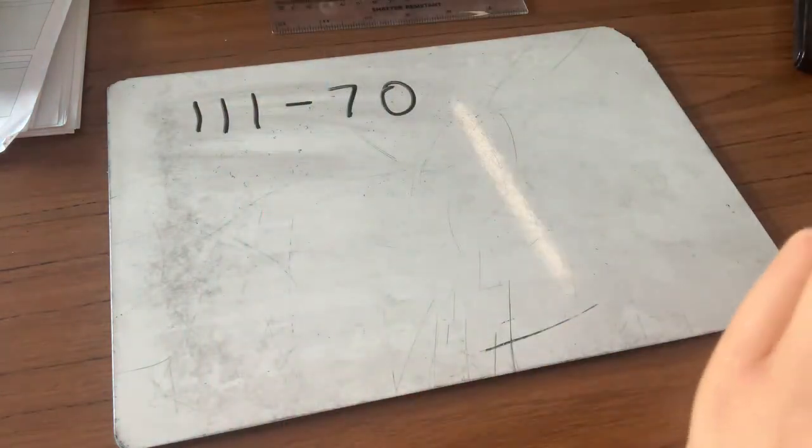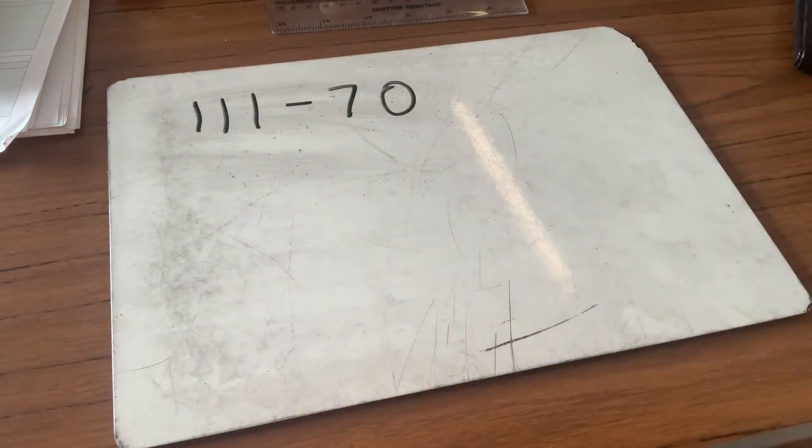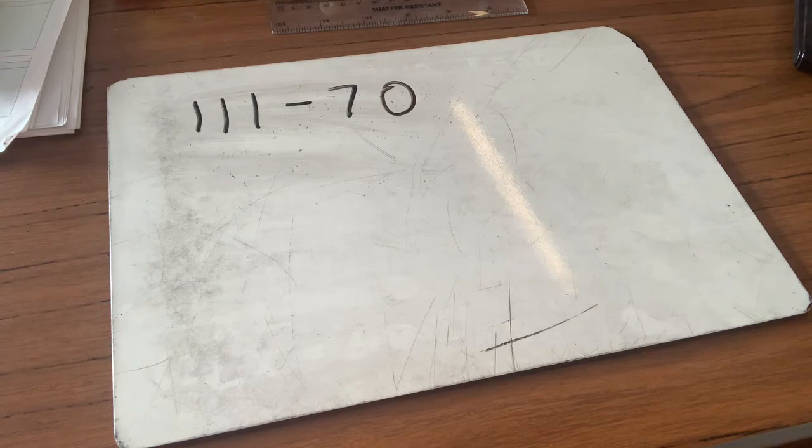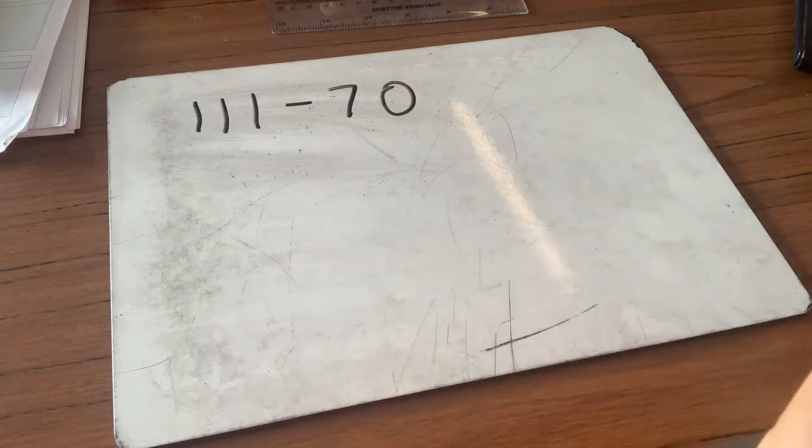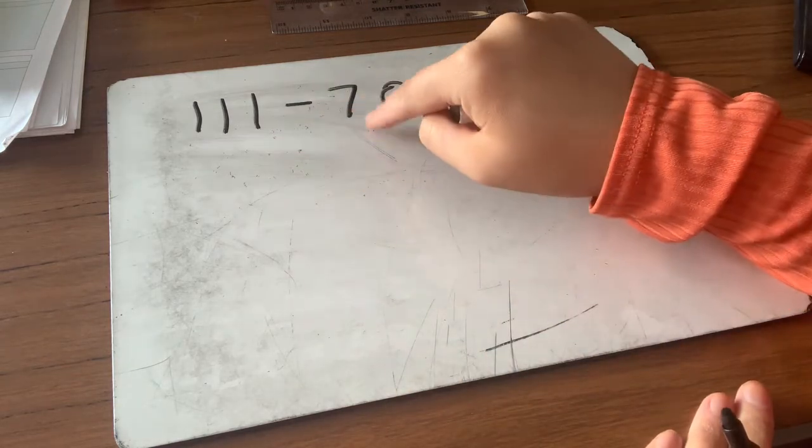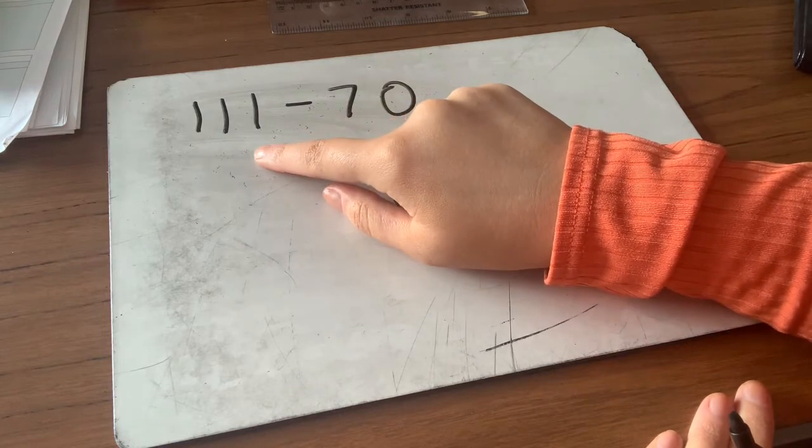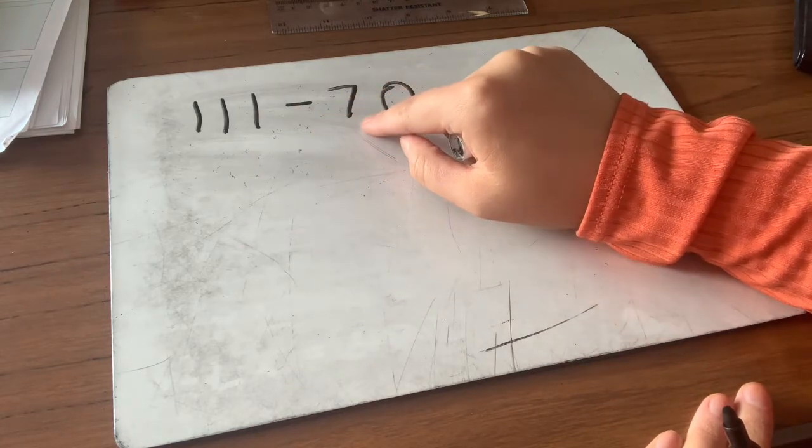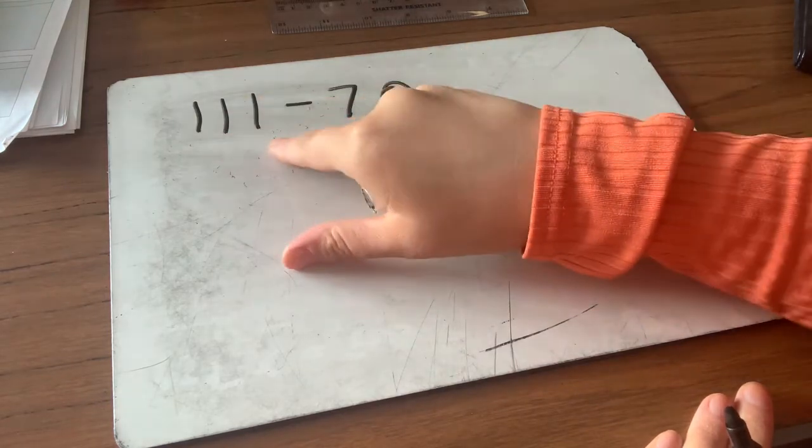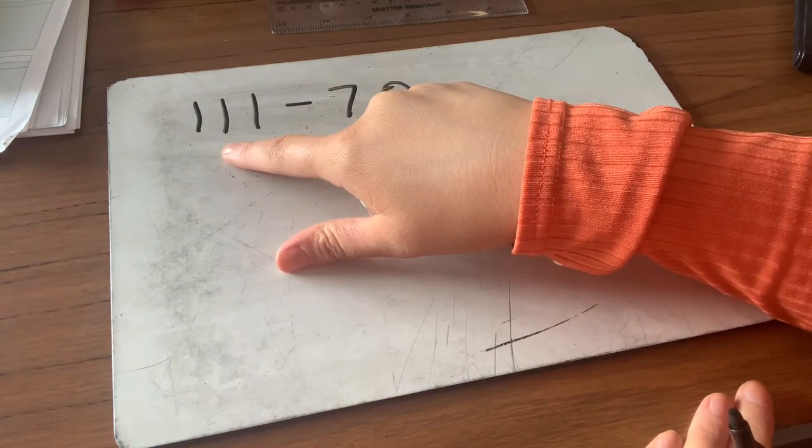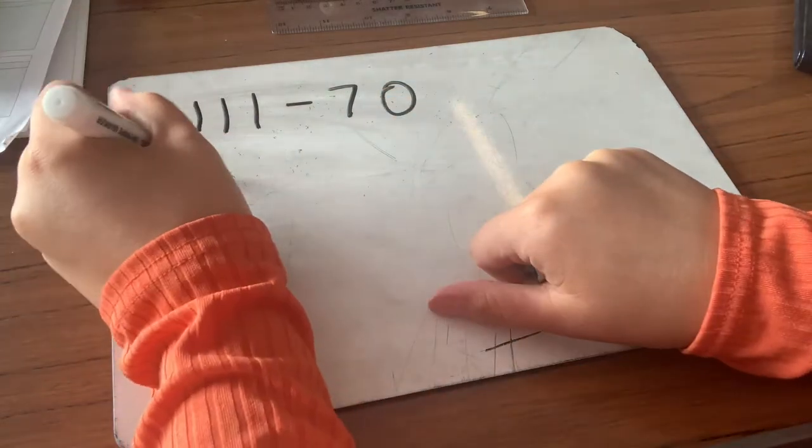Let's look at another one. So we've got 111 take away 70, so give this one a go. All right, we're already at the next 10, so we're just going to start counting on from 70 to 111. So I know that to get up to 100, I need three 10s, and then 11 more. So three 10s is 30, plus 11 more would be 41.